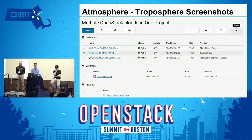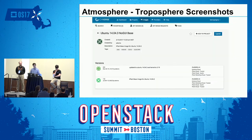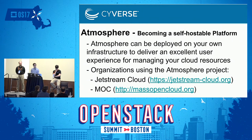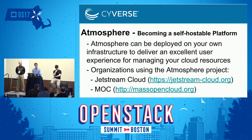We addressed this in 2014 by creating Troposphere, a single-page app built with React and Backbone.js that had a detailed image catalog with support for versioned images, so that users could see the established history of an image and how it changed over time. Troposphere also focused on grouping instances, volumes, and images into logical projects rather than based on cloud provider and credentials. Here's the project details view in Troposphere — you can see that the multiple OpenStack clouds project has three instances, each from a different cloud.